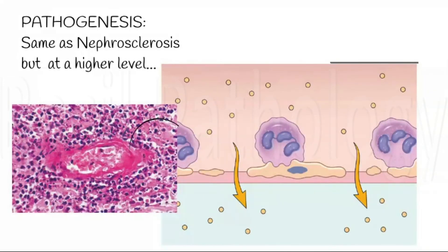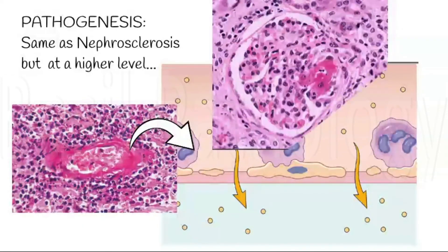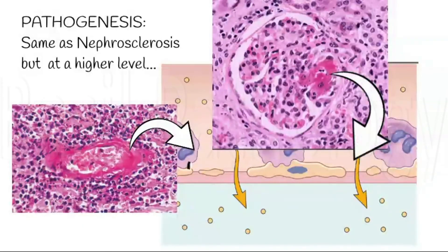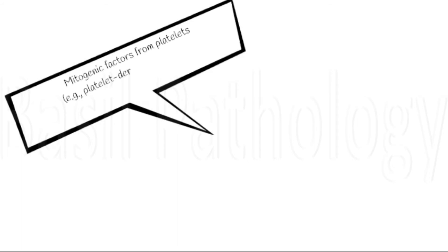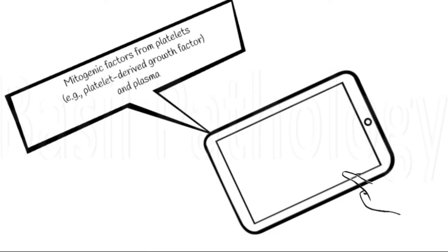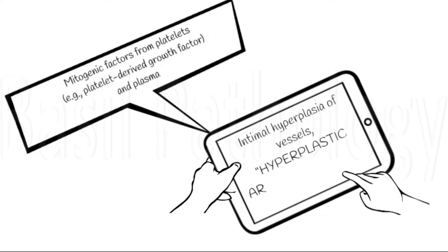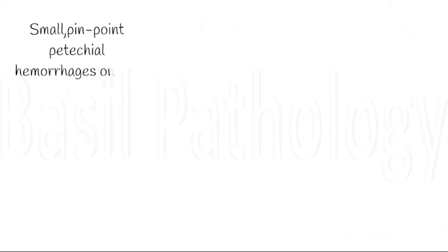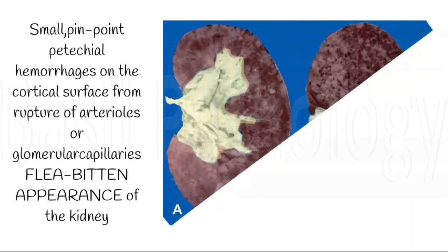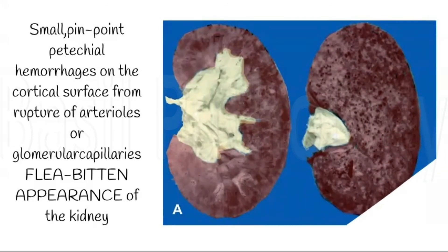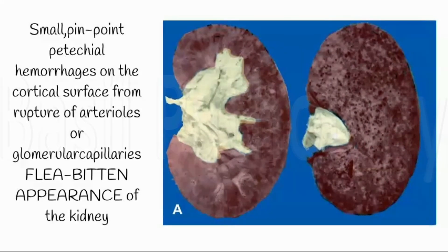Malignant hypertension is always associated with fibrinoid necrosis of the arterioles and small arteries of the kidney, and intravascular thrombosis. Mitogenic growth factors from platelets, like platelet-derived growth factor, cause intimal hyperplasia, leading to hyperplastic arteriosclerosis. Grossly, small pinpoint petechial hemorrhages are seen on the cortical surface, usually from rupture of arterioles or glomerular capillaries, giving a flea-bitten appearance to the kidney.